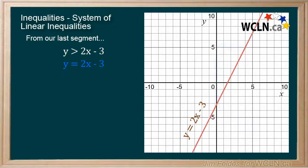If the points on the line are part of the solution, we use a solid line. If they're not, a dashed line is used.